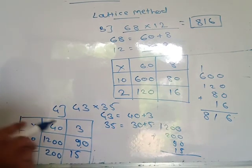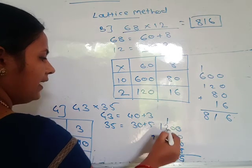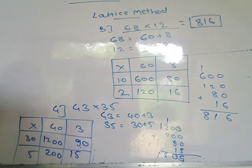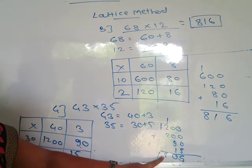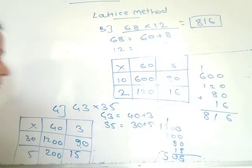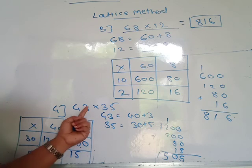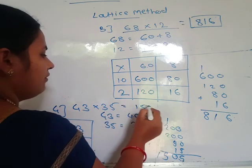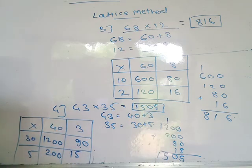Do this addition: 5, then 9 plus 1 is 10, write 0 carry 1, then 2 plus 2 is 4 plus 1 is 5, and 1. The answer is 1,505. So 43 into 35 is equal to 1,505, by using this lattice method.